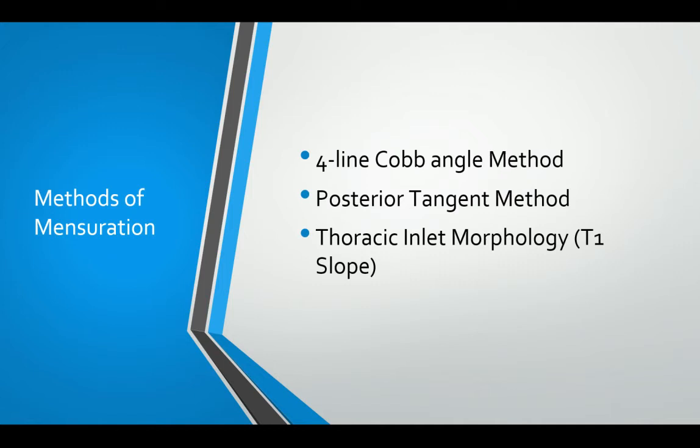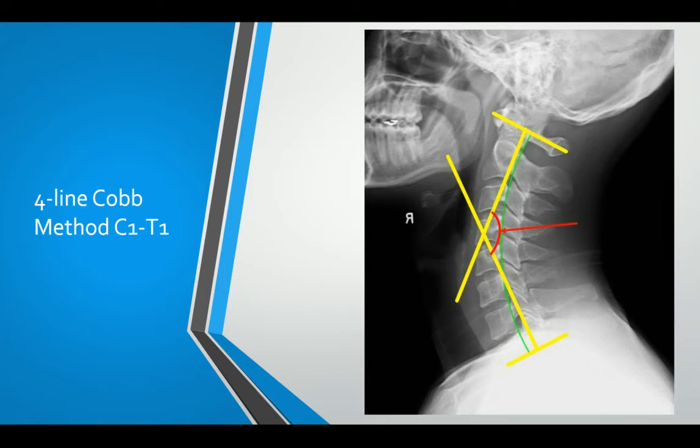This is the four-line Cobb angle method. A line is drawn through the midpoint of the anterior arch of C1, achieved by bisecting the anterior arch all the way through the midline to the posterior arch of C1, and then a 90-degree perpendicular line is drawn inferiorly from here. The inferior line is drawn along the inferior end plate of the T1 vertebrae, and then a 90-degree perpendicular line is drawn superiorly from there. Where the two perpendicular lines intersect is where we get the Cobb angle from.